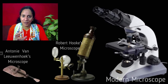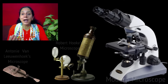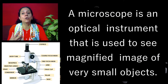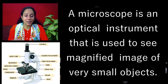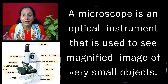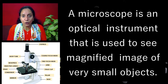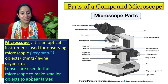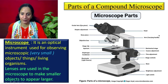Microscope is an optical instrument and it is used for observing microscopic objects, things, living organisms. It helps in magnifying the image of the object. In this, lenses are used to make the smaller object appear larger.